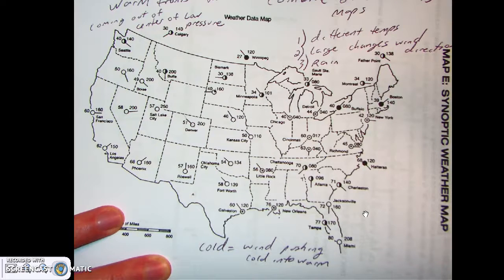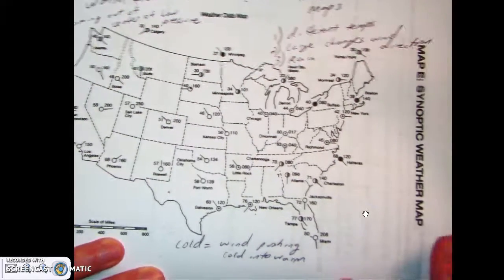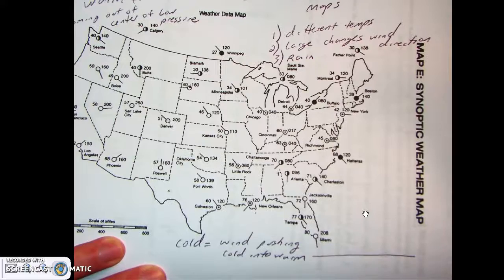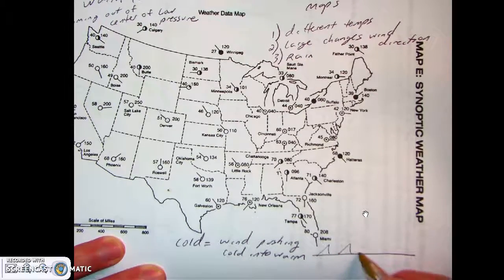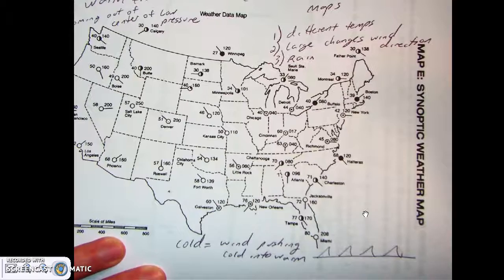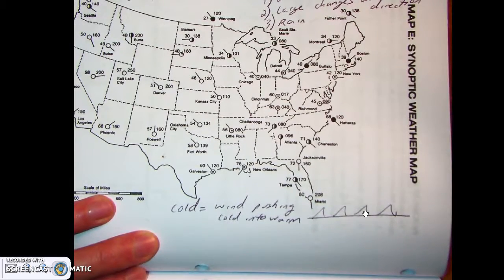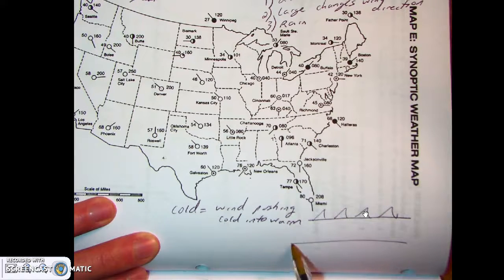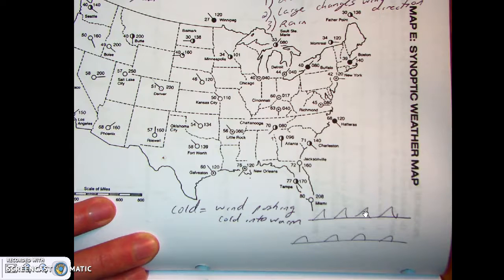Once you think you've found the boundary, draw the front. For a cold front — where cold air is moving into warm air — draw a line with triangles pointing toward the warm air. For the warm front — where warm air is moving into cooler air — draw a line with half-circles pointing toward the cool air. Neither line has to be straight; it can curve or bend.